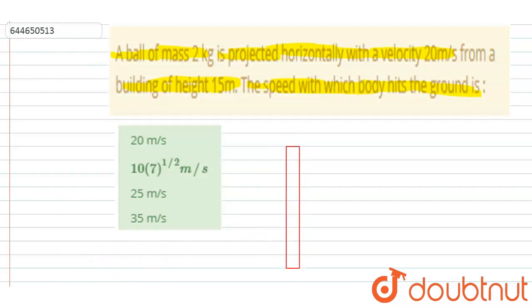From a height 50 meter, the building height is 50 meter, and from here it was projected with a velocity of 20 meter per second.